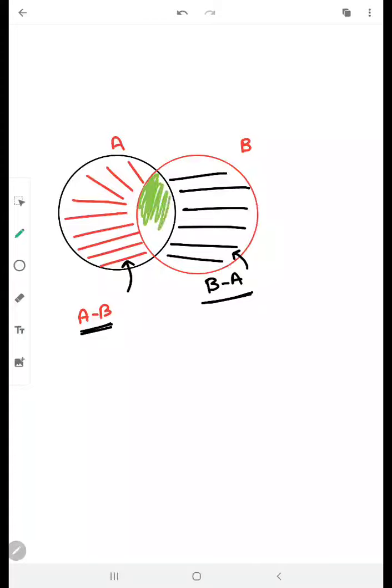These are the elements which are common in A and B. If I have to find out A-B, that means first you consider the whole A which is this black circle and excluding the common part. So excluding the common part, we will be left with this region. So this is known as A-B.